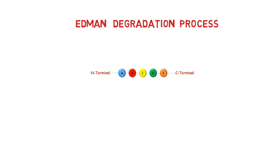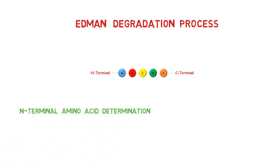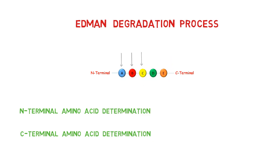Let's suppose this is a polypeptide chain with N and C-terminals. Whenever we try to find out the amino acid sequence in a polypeptide, we have both options: N-terminal amino acid determination and C-terminal amino acid determination. The only difference is that in N-terminal determination, amino acid A will separate out first, then B, then C, and so on. But in C-terminal determination, amino acid E will separate out first, then D, then C, and so on.